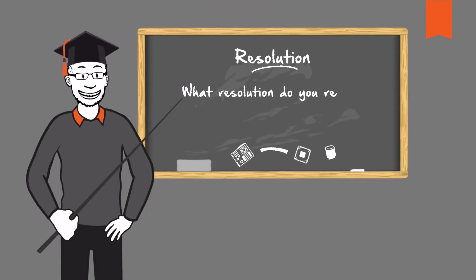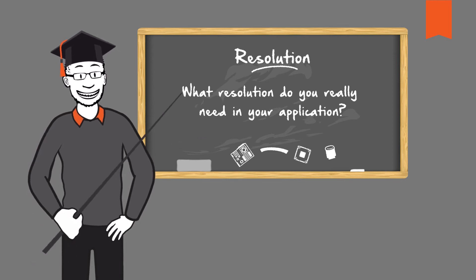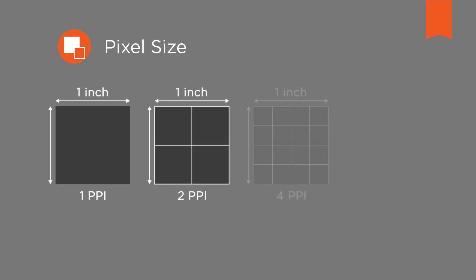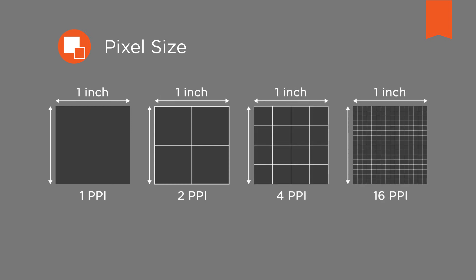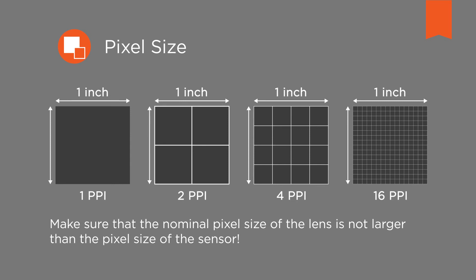What resolution do you really need in your application? Once the parameters have been set for your application, it is very difficult to change them later. Upfront planning for the image acquisition and exact calculation are therefore crucial for the lasting performance of the vision system. The pixel size also influences the choice of the lens and varies depending on the chosen sensor. If you want to achieve the maximum resolution of the camera, make sure that the nominal pixel size of the lens is not larger than the pixel size of the sensor. However, it is often worthwhile to evaluate the minimum resolution that is really needed in the application, as it has a significant impact on the cost of the lens.